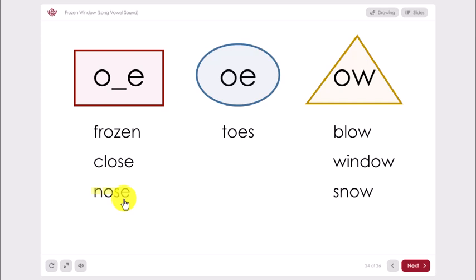For example, how many sounds do you hear in the word snow? S-N-O. Three. How do you spell the O sound in snow? In this word, you spell it with O-W.